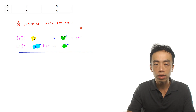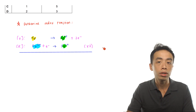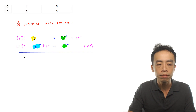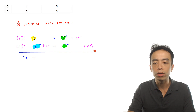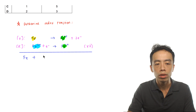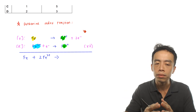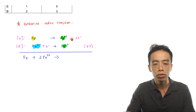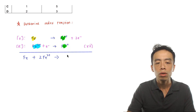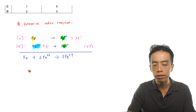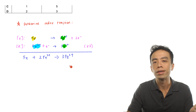We double the reduction half equation so that when we add the oxidation and reduction half equations together, the two electrons cancel. We end up with: iron metal reacting with 2 iron 3+ to give 3 iron 2+. One iron 2+ comes from the oxidation half equation and two iron 2+ from the doubled reduction half equation, giving three iron 2+ overall. So the overall balanced equation is: Fe + 2Fe³⁺ → 3Fe²⁺.